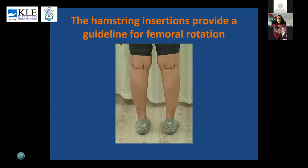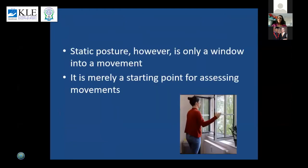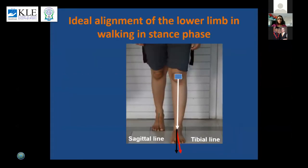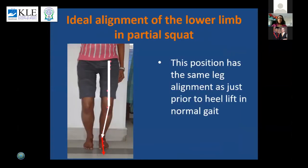Sometimes the patella is not in the perfect position, so it is also important to look at the hamstrings from the posterior aspect. The medial and lateral hamstrings should appear symmetrical when the patient stands. The hamstring insertion is a good guideline for femoral rotation. Static posture is only a window into movement and merely a starting point — movement analysis is very important for physiotherapists. The center of the knee should be vertically above the tibial line in the stance phase, and it is important to check alignment in the partial squat, which mirrors alignment just prior to heel lift in normal gait.